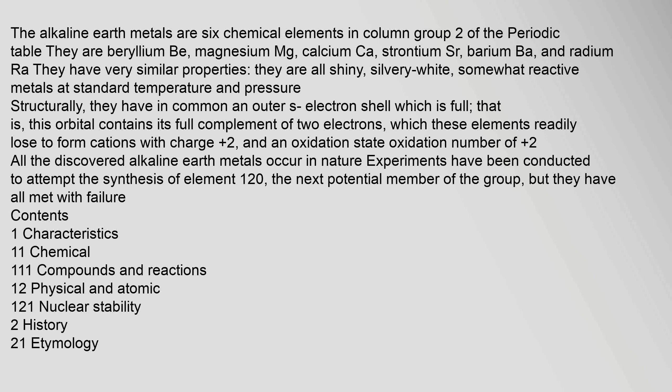The alkaline earth metals are six chemical elements in column group 2 of the periodic table. They are beryllium (Be), magnesium (Mg), calcium (Ca), strontium (Sr), barium (Ba), and radium (Ra).